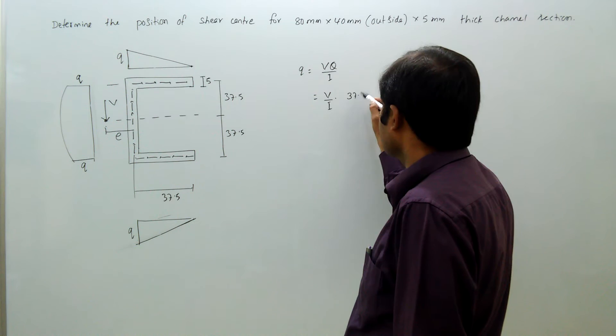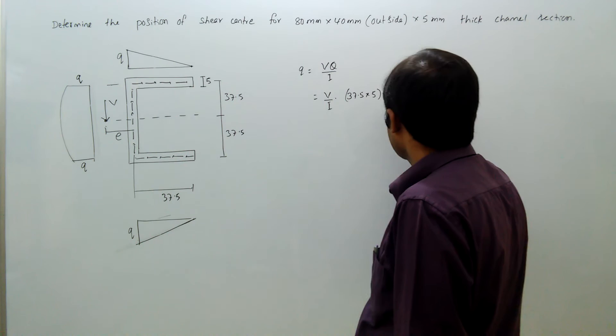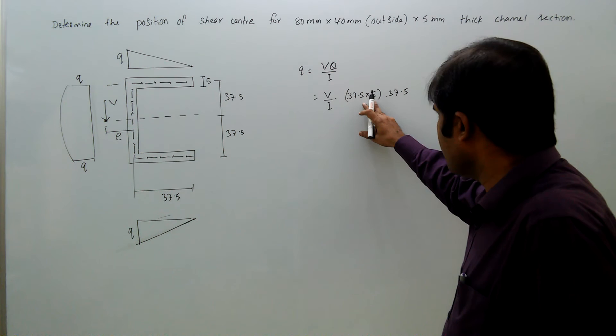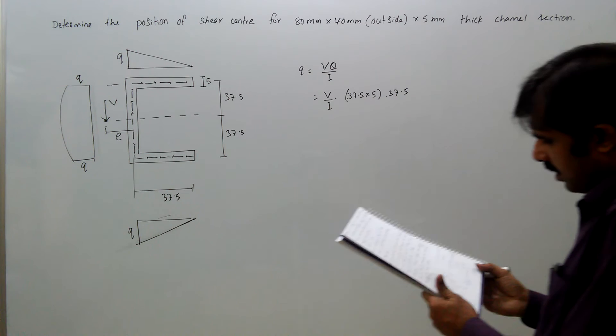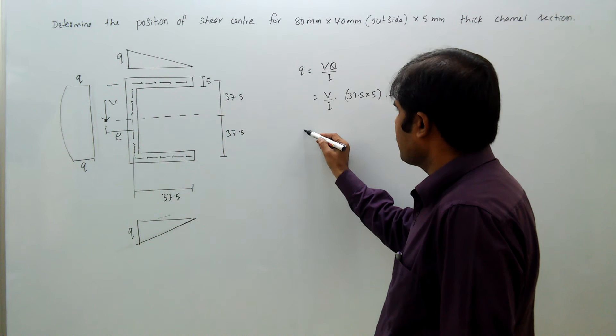Q is the moment of that area: 37.5 times 5 times the center distance 37.5, so 37.5 times 5 is the area and 37.5 is the center distance. That gives us Q. And what is I?